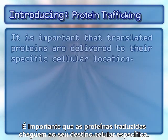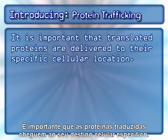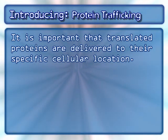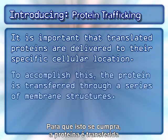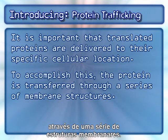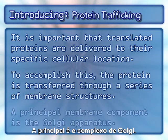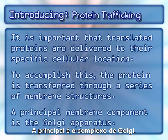It is important that translated proteins are delivered to their specific cellular location. To accomplish this, the protein is transferred through a series of membrane structures. A principal membrane component is the Golgi apparatus.